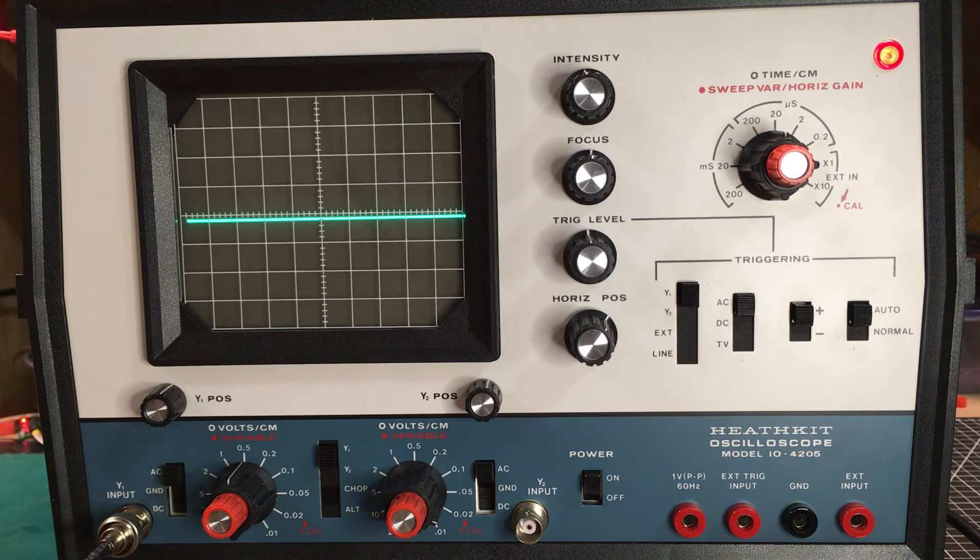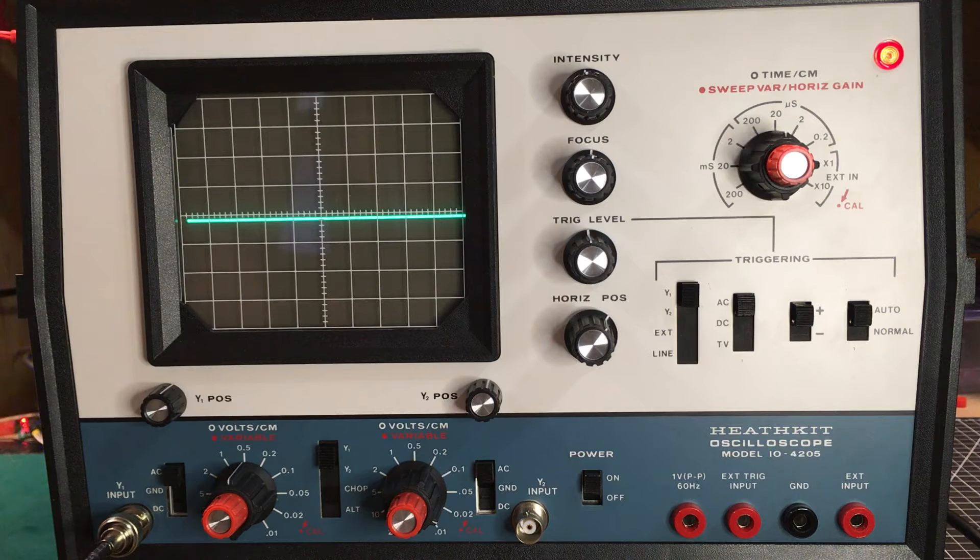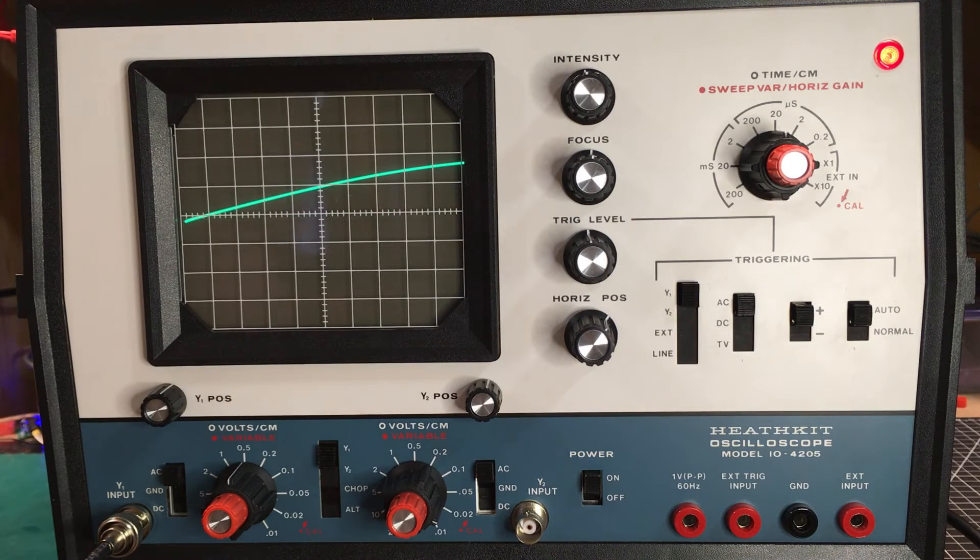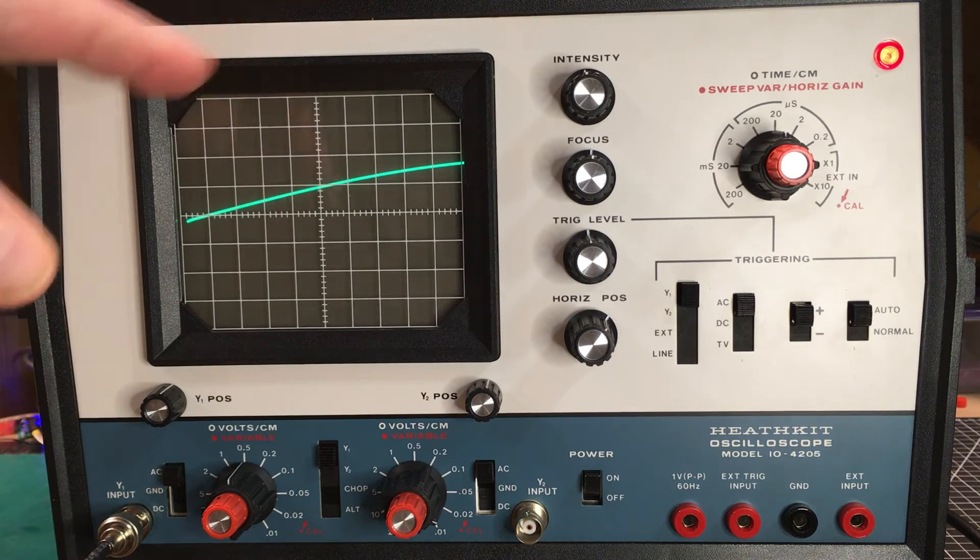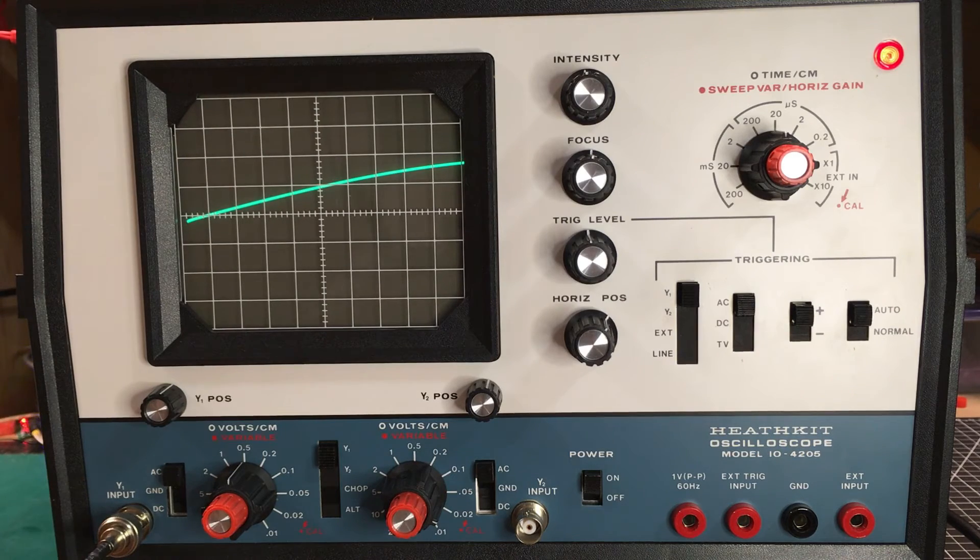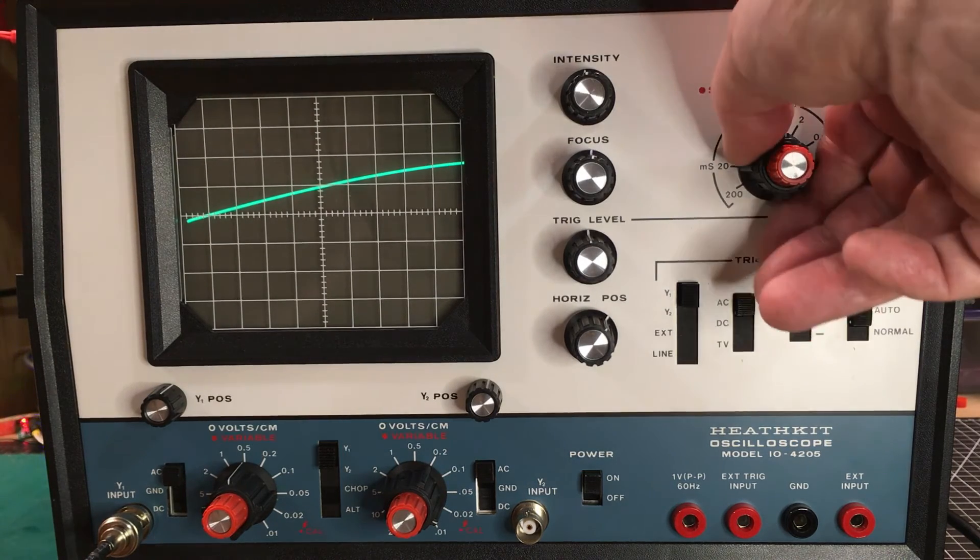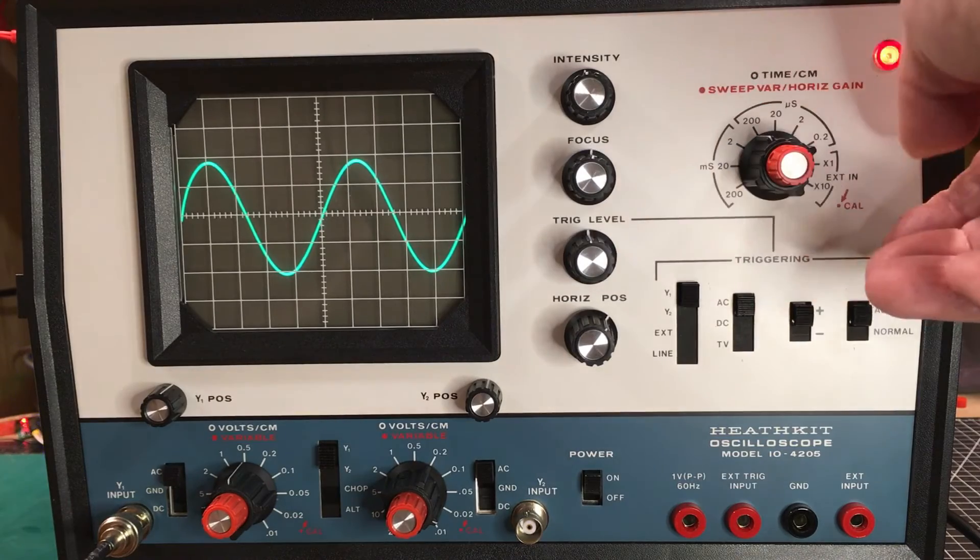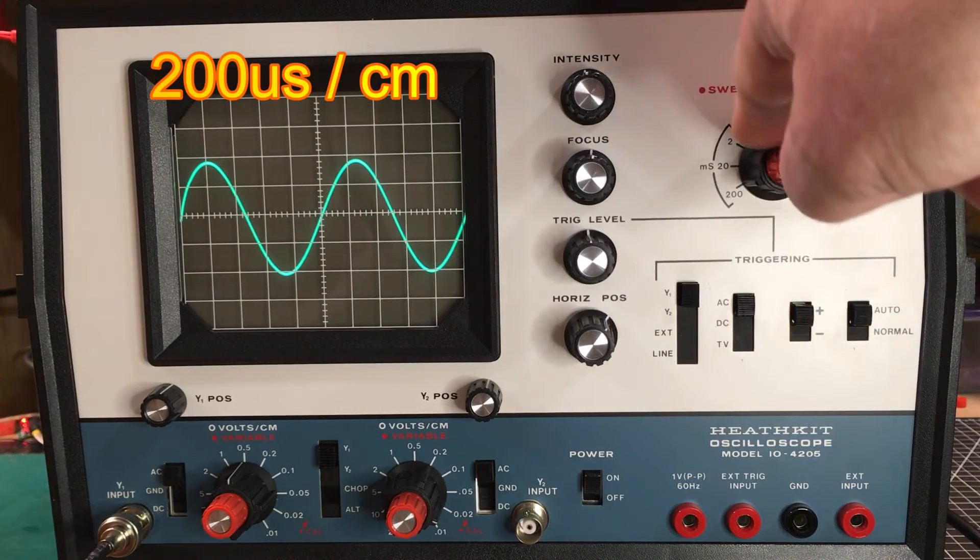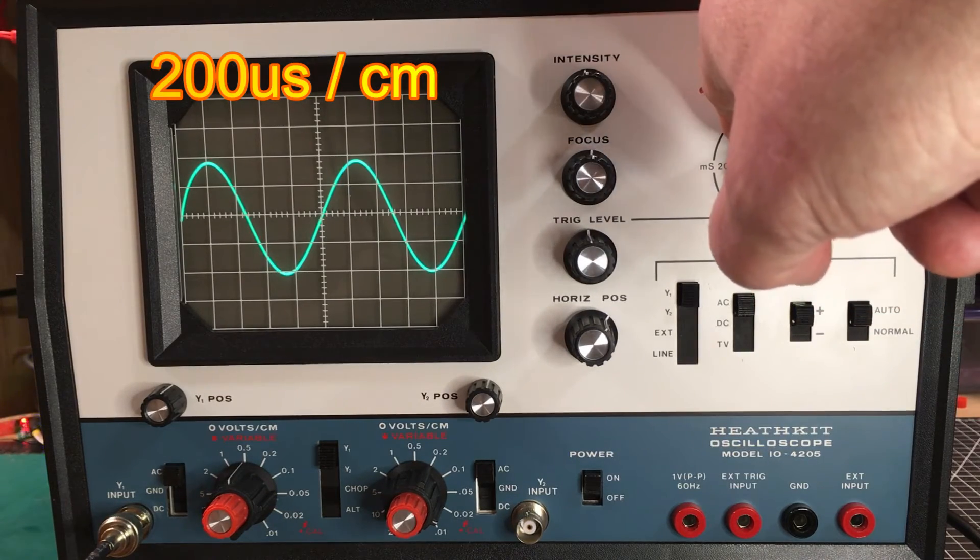Now we're all set to apply our signal. I've got a signal generator here, and we'll turn on the signal generator. And now we can see we've got some sort of deflection here, but we have to adjust our time base appropriately. So there we go. We're at 2000 microseconds per centimeter.